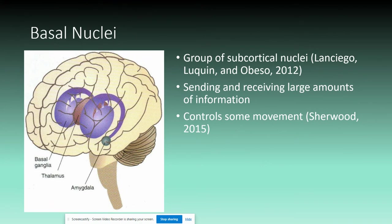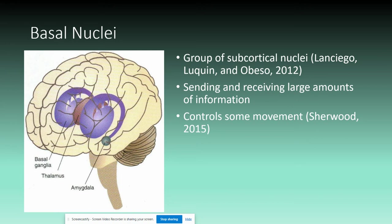The basal nuclei are a group of subcortical nuclei and part of our forebrain. This area sits lateral to the thalamus and is a core part of our brain — much like the inner core of the earth. The basal nuclei are responsible for sending and receiving large amounts of information due to the astronomically large number of fibers linking these nuclei to other sections of the brain. Movement functions controlled here include inhibiting muscle tone throughout the body, selecting purposeful motor activity and suppressing unnecessary movement patterns, and monitoring and coordinating slow sustained contractions related to posture and support.